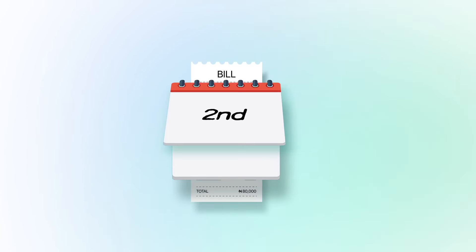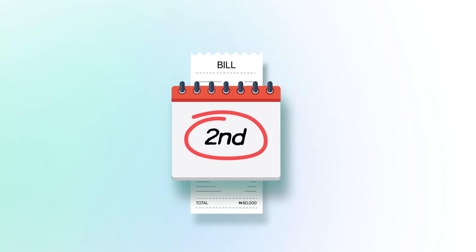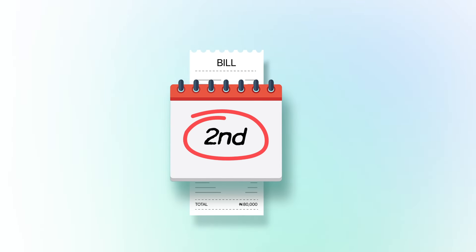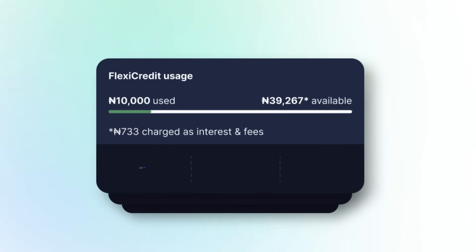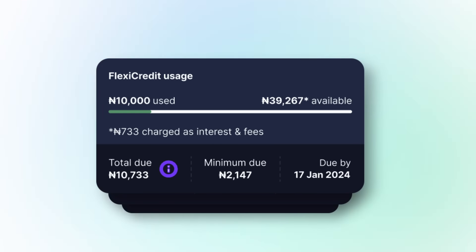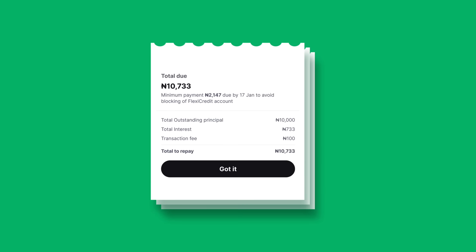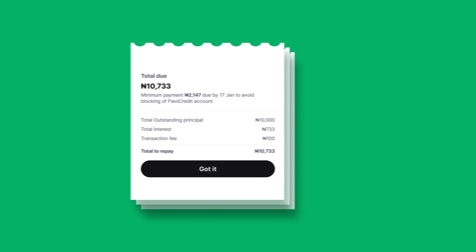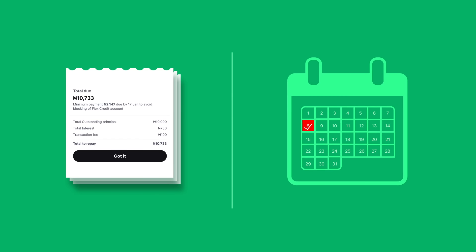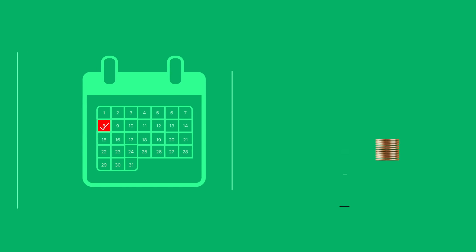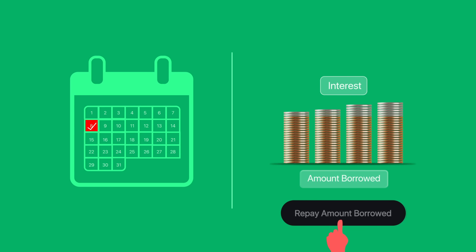Let me break it down. After activating and withdrawing from your FlexiCredit account, your bill will be generated on the second of every month. This bill will show you your total balance along with the minimum payment required by the due date. When this bill is generated, you will enjoy a 6-day grace period to pay only the interest on the borrowed amount. This is called the minimum due payment.